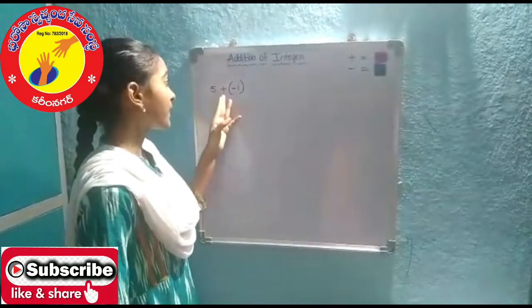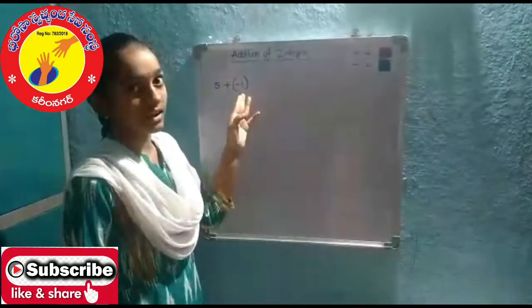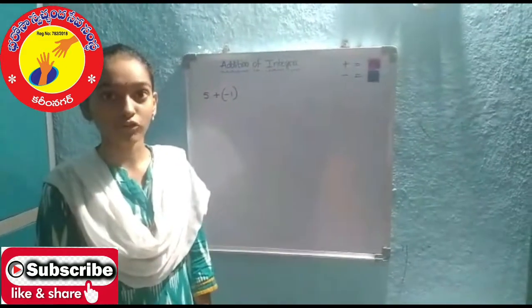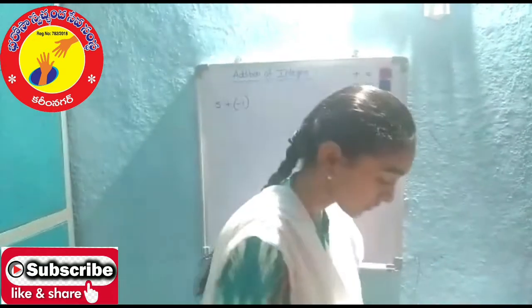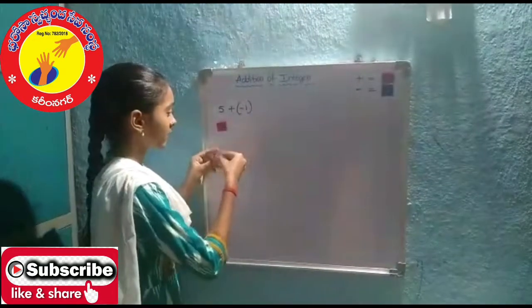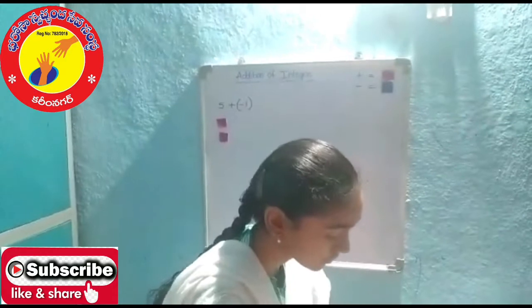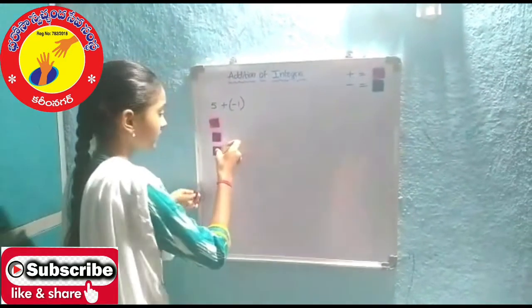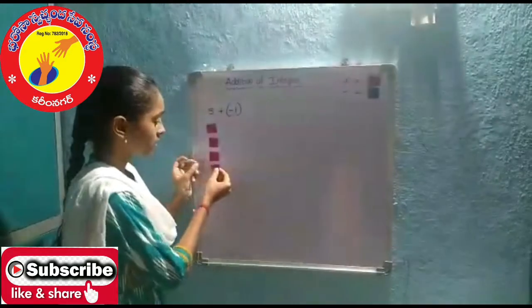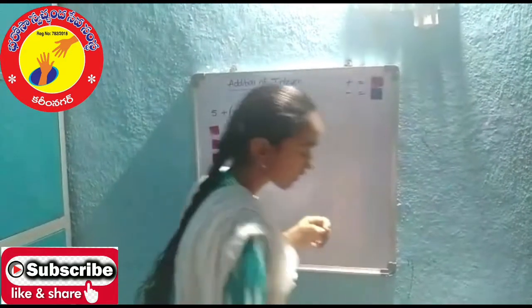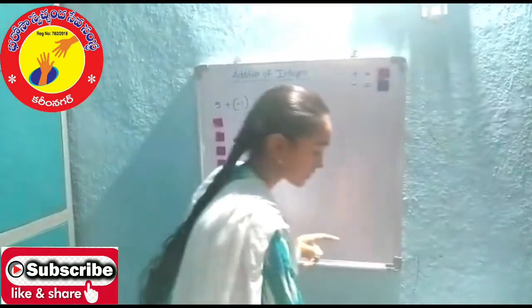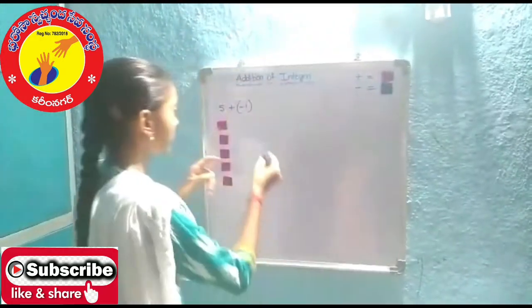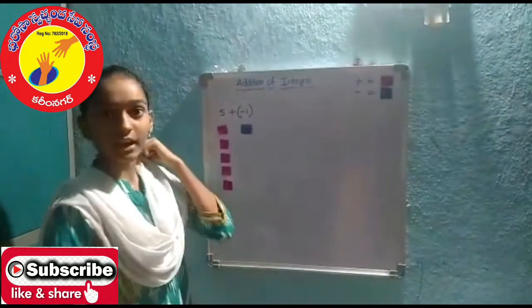Here is 5 plus negative 1. It means we have to take 5 positive integers and 1 negative integer. 1, 2, 3, 4, and 5. We have to take 1 negative integer. We have to take out zeros.